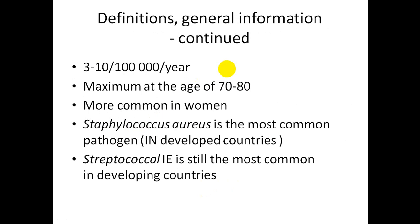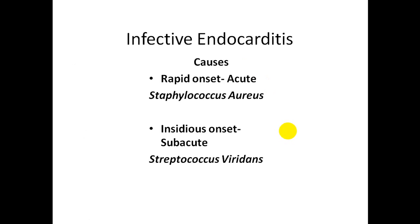Though rare, infective endocarditis has high mortality: three to ten per 100,000 population per year. It is mainly an adult disease, most common between 70 and 80 years old, more common in men in general. Staphylococcus aureus is the most common pathogen in developed countries where IV drug abuse is prevalent, while streptococcal infection is still most common in developing countries. In summary: rapid-onset acute endocarditis is usually Staphylococcus aureus, while insidious-onset subacute endocarditis is most commonly Streptococcus viridans.